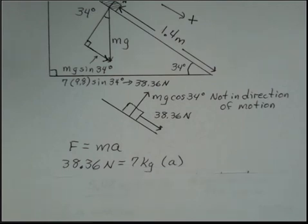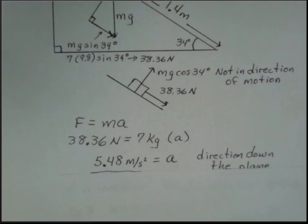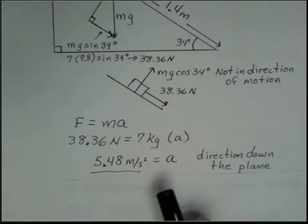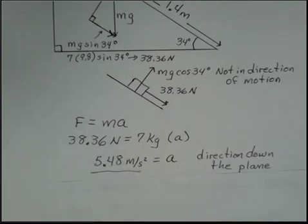So 38.36 Newtons, there's only one force in the direction of motion because there's no friction. 7 kilograms is the mass. Divide 38.36 by 7, you come up with 5.48 meters per second squared as our acceleration. That acceleration direction is down the plane. The acceleration is always in the same direction as the net force on your object.